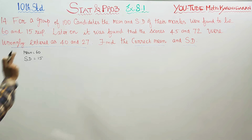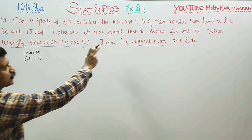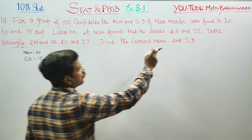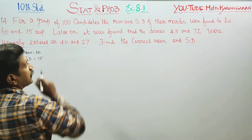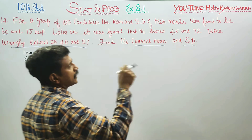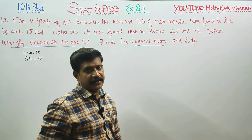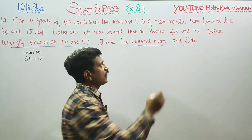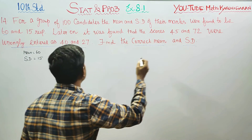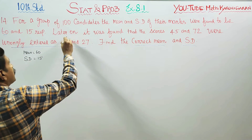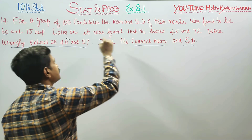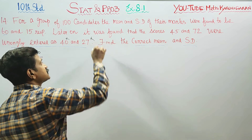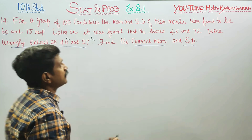Later on, it was found that the scores 45 and 72 were wrongly entered. The wrong data entries are: wrong entry one is 40, wrong entry two is 27. The correct values should be 45 and 72.